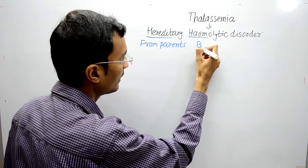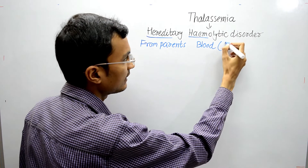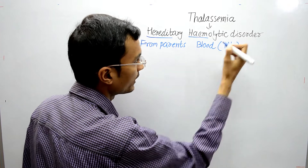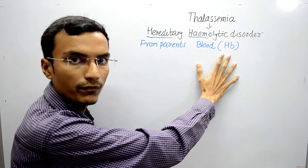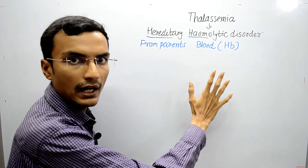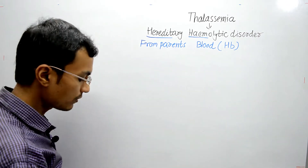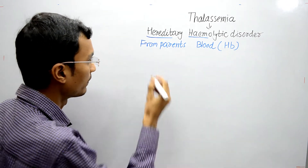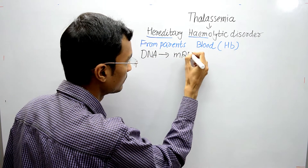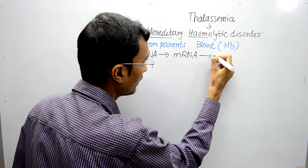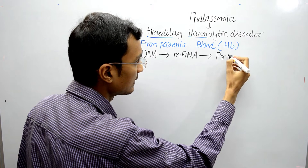Hemo means it is related to blood, and more specifically it is related to the Hemoglobin protein. The Hemoglobin protein has 4 different types of globin chains. We also know the central dogma of life — DNA to mRNA, and mRNA to amino acid sequences, and finally the protein is synthesized.